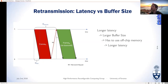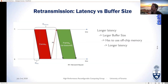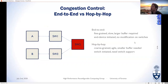The retransmission delay is positively correlated to link delay. With end-to-end retransmission the logical link includes multiple physical nodes, and link delay dominates retransmission delay, resulting in larger buffer size requirements. At a certain point the end device can no longer use on-chip memory and must use off-chip memory, which further increases latency.